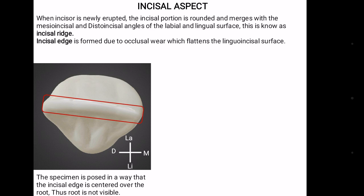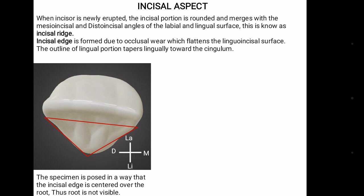Incisal ridge is rounded and merges with mesioincisal and distoincisal angles. With time, it gets converted into an incisal edge due to continuous occlusal wear. As the tooth shows tapering towards the lingual side, we can see a triangle being formed lingually towards the cingulum.